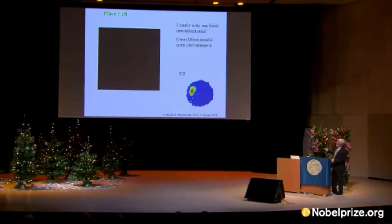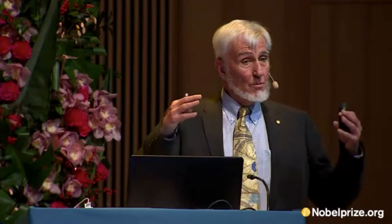One thing I should point out is that if an animal runs around in an environment like this in an open field, it turns out it doesn't make any difference which direction the animal runs through the place field. If it runs north, the cell is happy to fire; if it runs south, it's equally happy to fire. It looks as though the cell is representing the location, and not something about the sensory impressions that the animal is getting in that location.